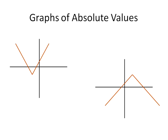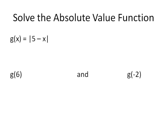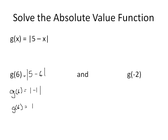Now let's go ahead and solve some absolute values. Here are some absolute values in function notation. The function g of x equals the absolute value of 5 minus x. Using function notation, we solve when x equals 6, so g(6) equals the absolute value of 5 minus 6, which is negative 1. So g(6) equals positive 1 — the absolute value of a negative number gives a positive number.